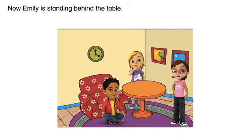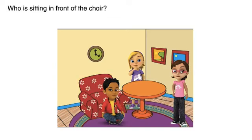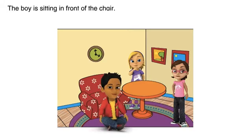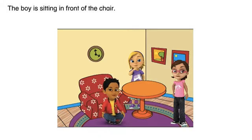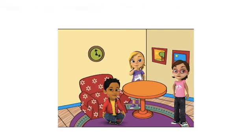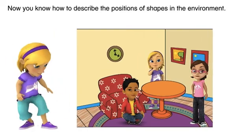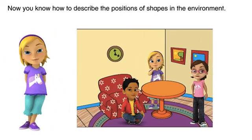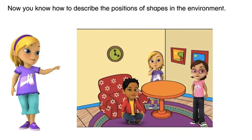Where is Emily standing now? Now Emily is standing behind the table. Who is sitting in front of the chair? The boy is sitting in front of the chair. Now you know how to describe the positions of shapes in the environment.